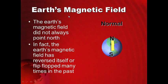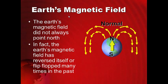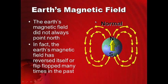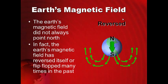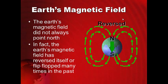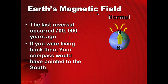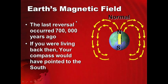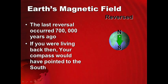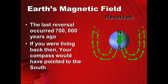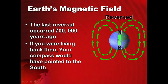The earth's magnetic field did not always point north. In fact, the earth's magnetic field has reversed itself, or flip-flopped. This is our normal state — what we're in right now — but in the past the field has reversed. The last reversal occurred 700,000 years ago, and if you were living back then, your compass would have pointed to the south.